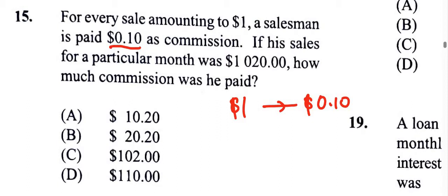If you have a dollar here — imagine the zeros there for the dollar — you move one place to the left and you get 0.1, which we can write as 0.10, and refer to that as 10 cents. So 10 cents is really 10% of a dollar.